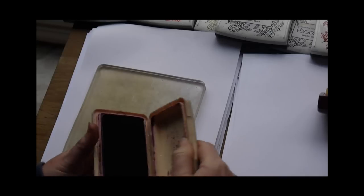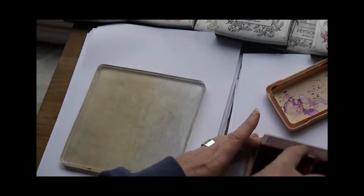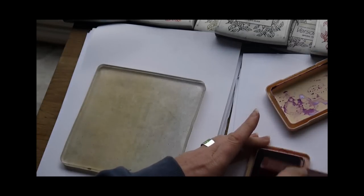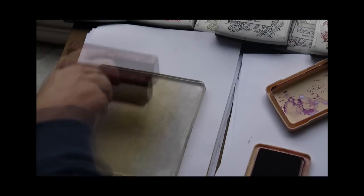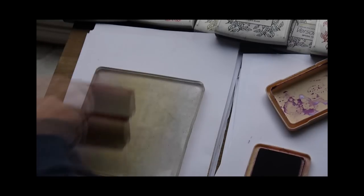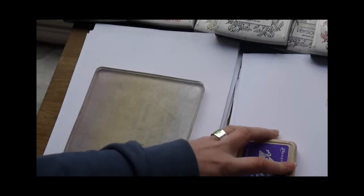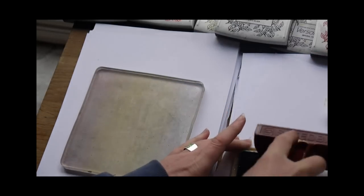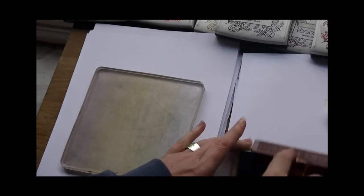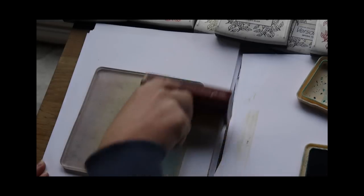And then moving on to another colour, this is the Purple Twilight. And again inking it, transferring that over to the jelly plate and just blending the colour in. And now we're working with Stream. So again inking up, transferring straight over and blending that in.